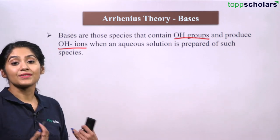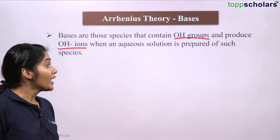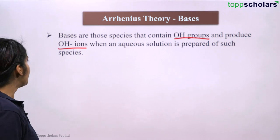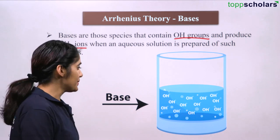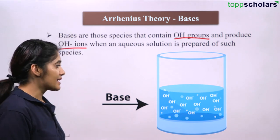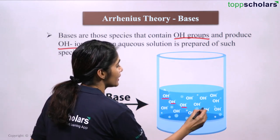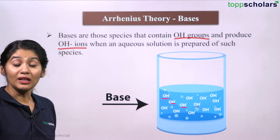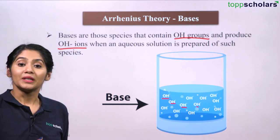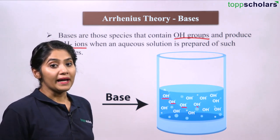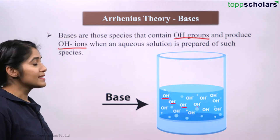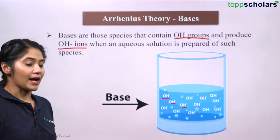Bases are those species that contain OH groups and produce OH- ions when an aqueous solution is prepared. For acids, H+ ions are released; for bases, OH- ions are released. Compounds that increase the number of OH- in aqueous solution are called bases. Because of the addition of OH- the pH also rises, which is why it becomes a basic solution.